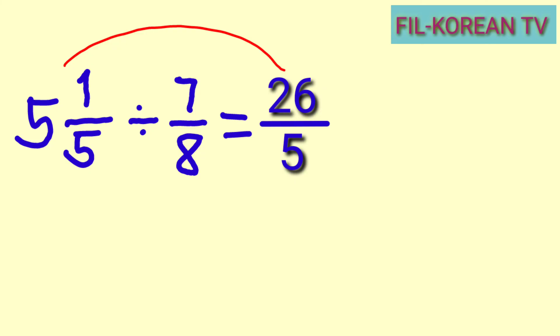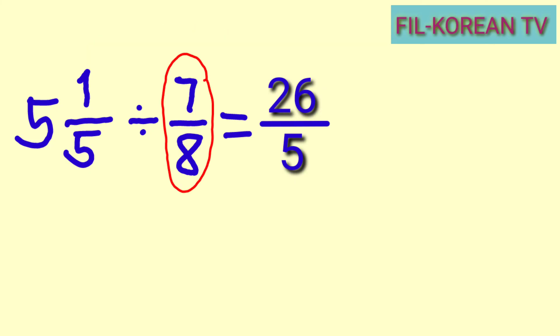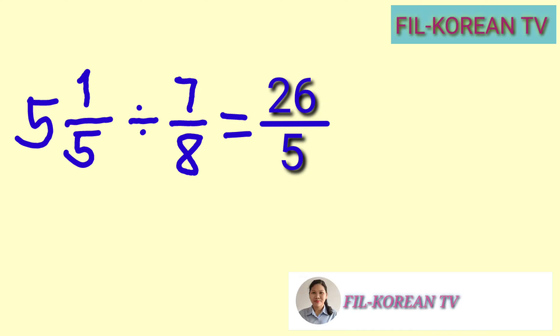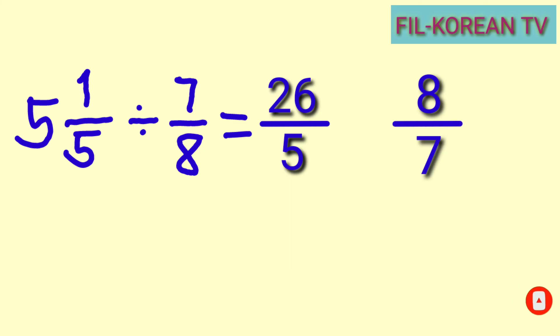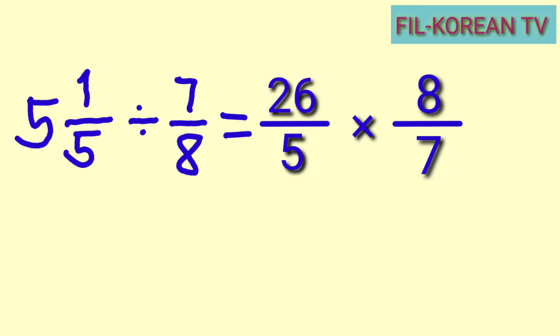The next step is to get the reciprocal of the divisor seven eighths. To get the reciprocal, we will just exchange the position of the numerator and the denominator. The denominator eight will be the numerator and the numerator seven will be the denominator. So the reciprocal of seven eighths is eight sevenths. Then we will change the division sign into a multiplication sign.